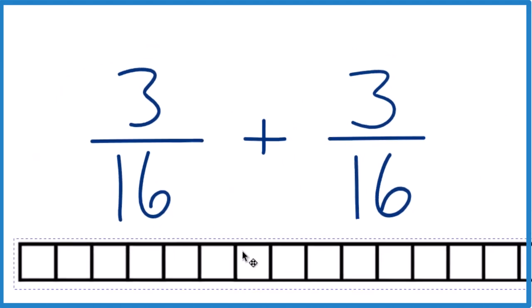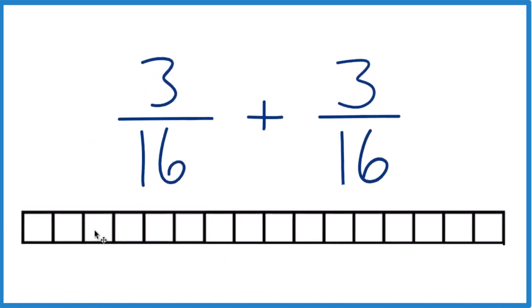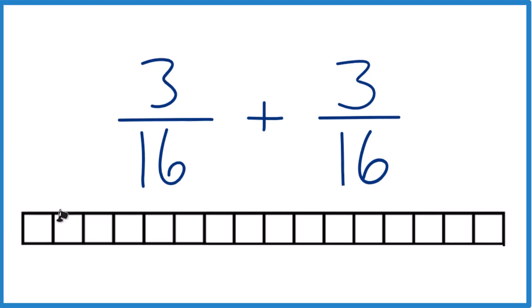is if you're measuring something and you have 16 blocks, so each one is 1 sixteenth, and you have three of them, there's your 3 sixteenths, and you're going to add three more sixteenths. So you're going to add three more blocks.